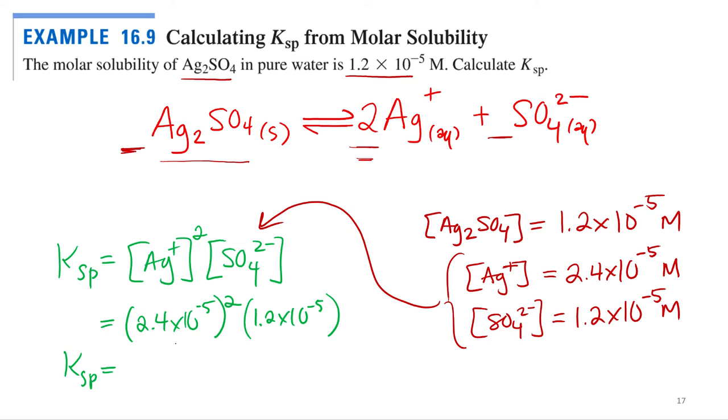All right. So, man, that's a bad zero. So 2.4 times 10 to the negative 5th squared times 1.2 times 10 to the negative 5th equals 6.9 times 10 to the negative 15th. So that is the KSP for silver 1 sulfate.